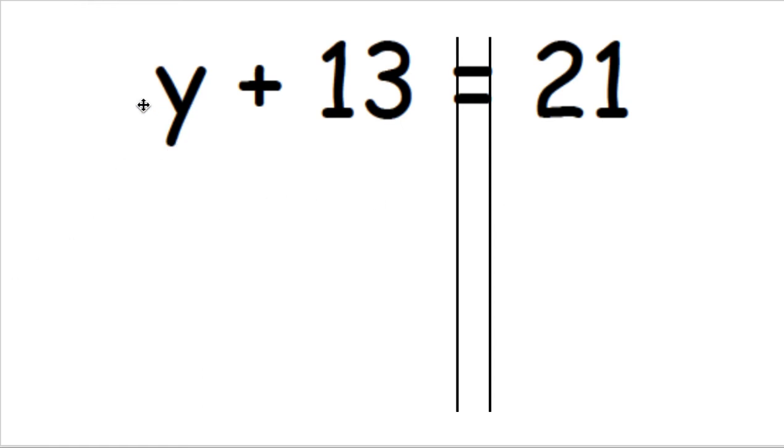On this side with the variable, I have y plus 13. I'm only focusing on this side - what I want to do is get this 13 out of there. The way I can do that is by doing the opposite or inverse operation of plus 13. The inverse operation of plus is minus.